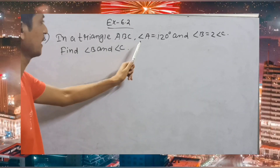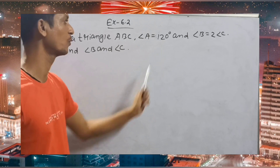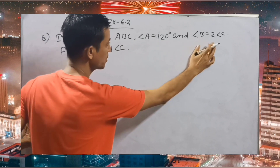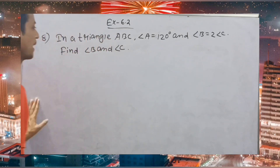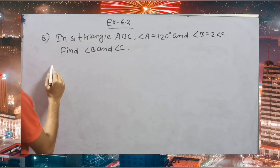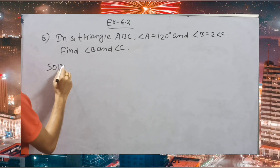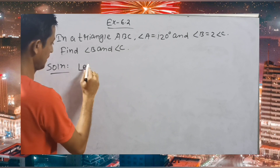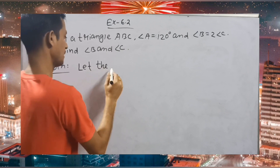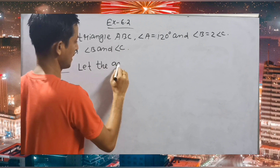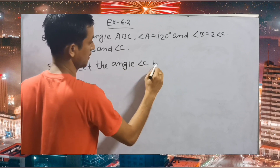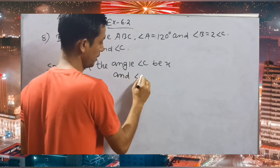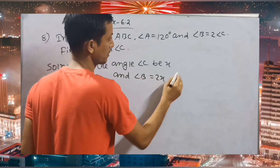In triangle ABC, angle A is equal to 120 degrees and angle B is twice angle C. Find B and C. Let angle C be x, and angle B is obviously twice C, that is 2x.